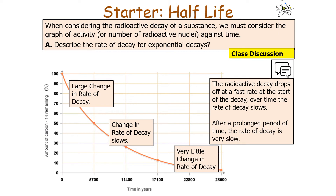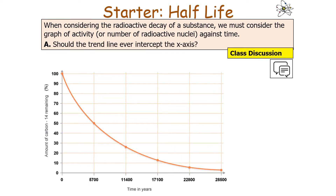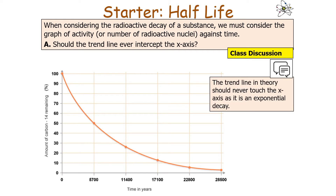The reason for this is that the chance for each nucleus to decay is the same. At the start there are lots of radioactive nuclei, so lots of them decay. At the end, there are fewer radioactive nuclei but the same decay probability, so very few decay. However, because the chance of decaying is the same, the proportion decaying remains constant. The trend line should never intercept the x-axis — that is a feature of exponential decay.